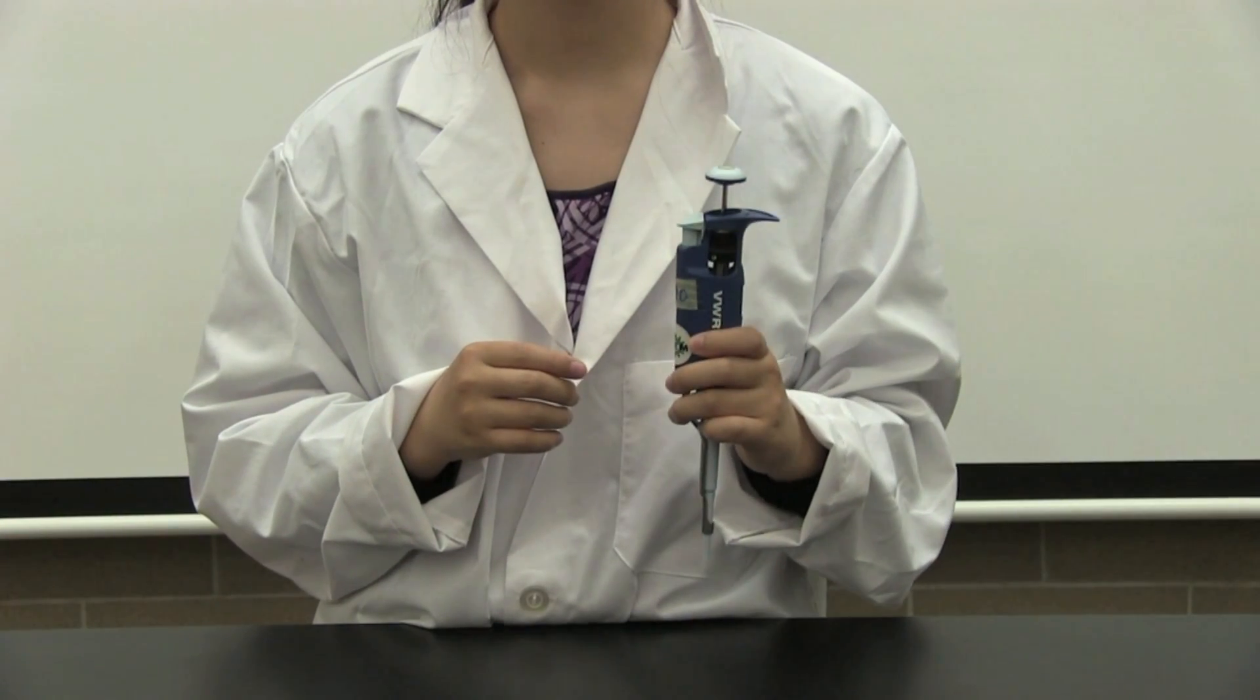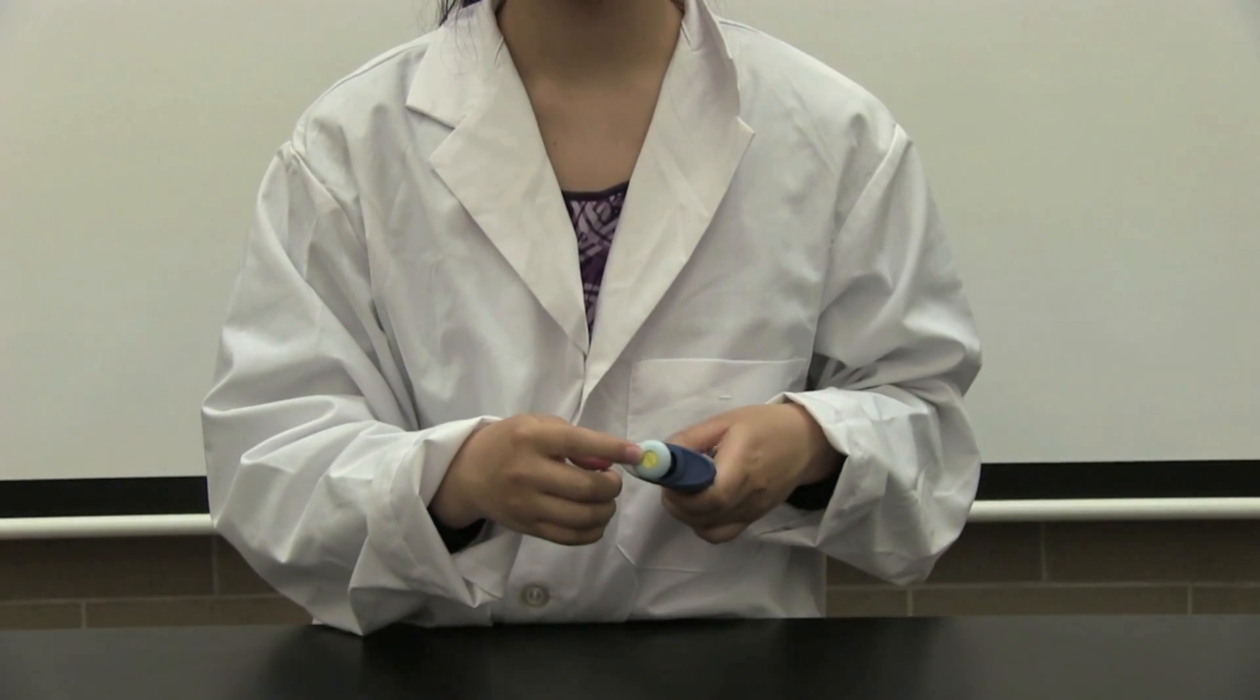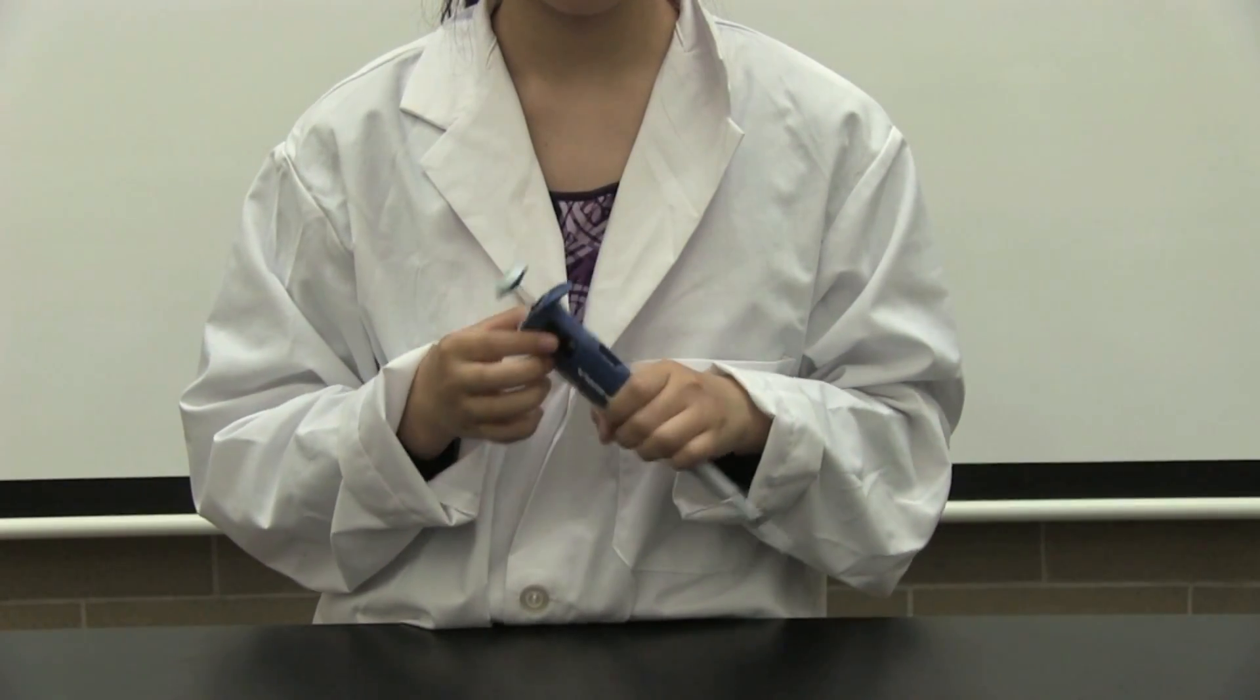When we get our micropipette, it is important to check its size at the top of the micropipette and adjust its volume by spinning the dial.